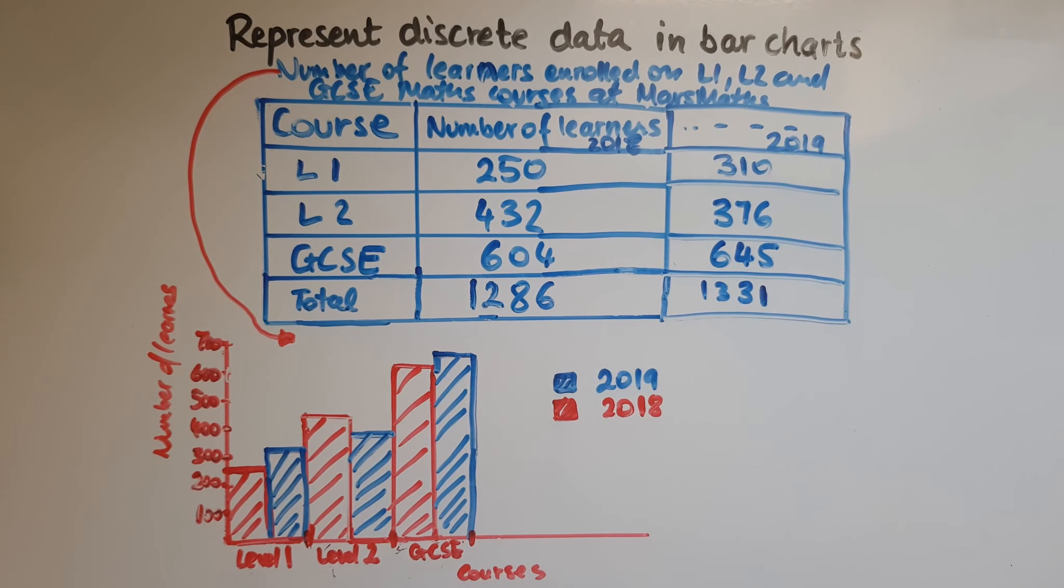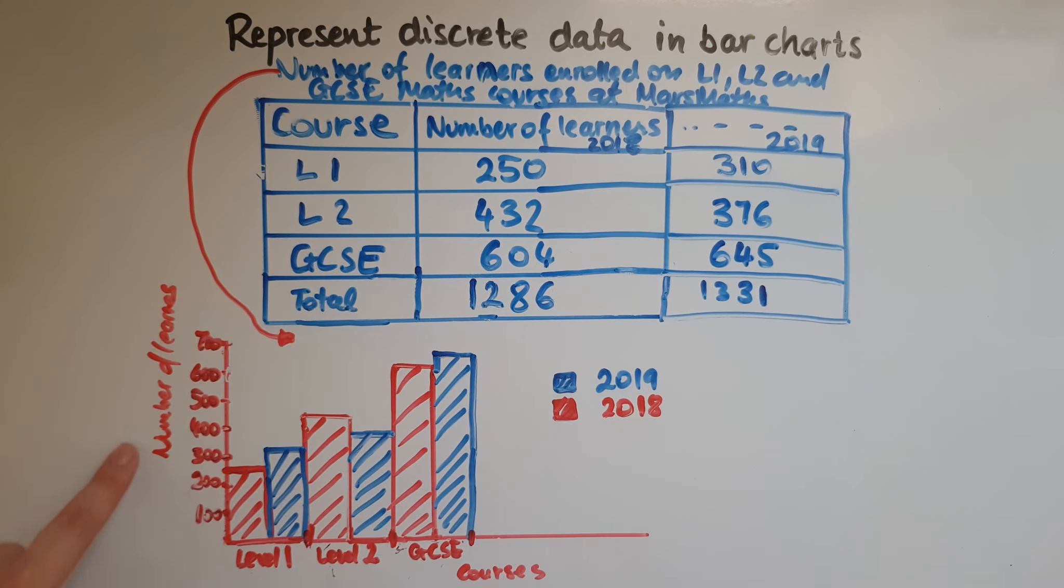In terms of the title, because we need to include the title, then we'd have something very similar to this: number of learners enrolled on level 1, level 2, and GCSE maths courses at maths in 2018 and 19. So we've got to be specific, what is it about and include the years as well. And we've labeled the two axes as well. So we still have courses just like we had before and number of learners on this side, just like we did when we had only the 2018 data.